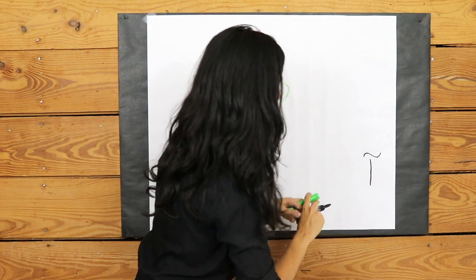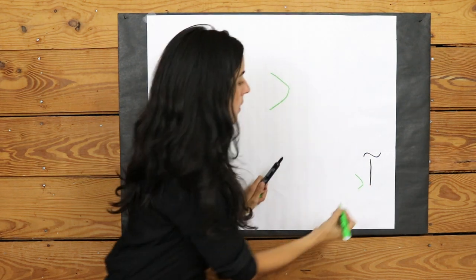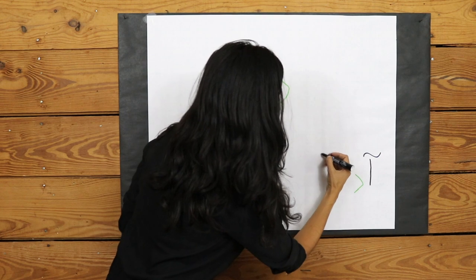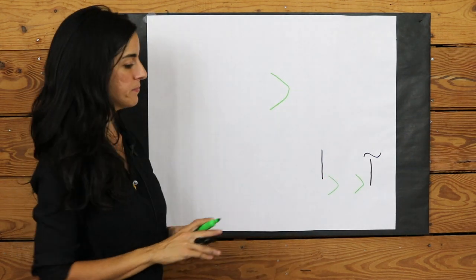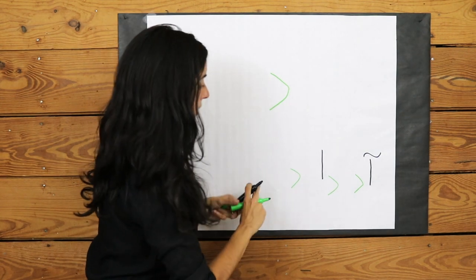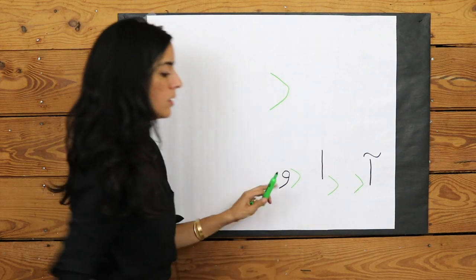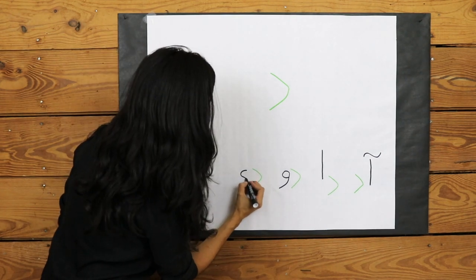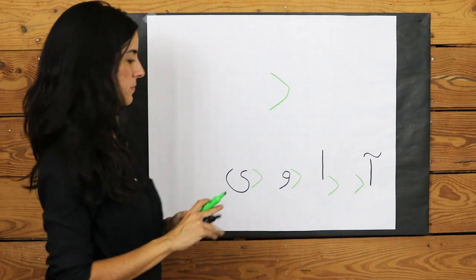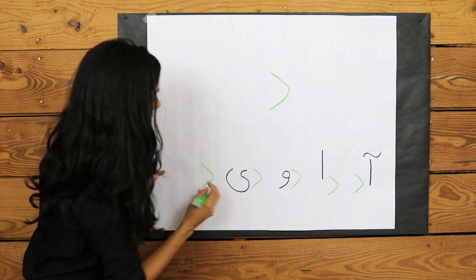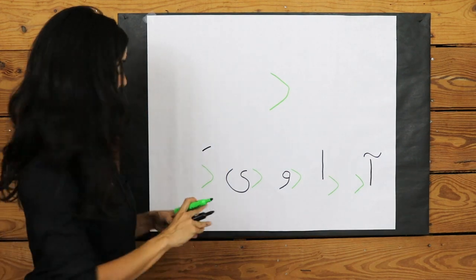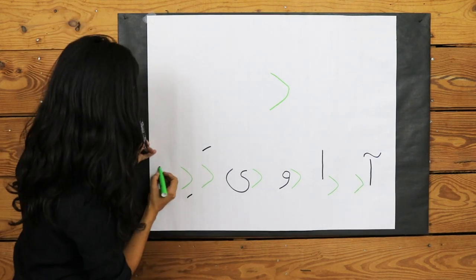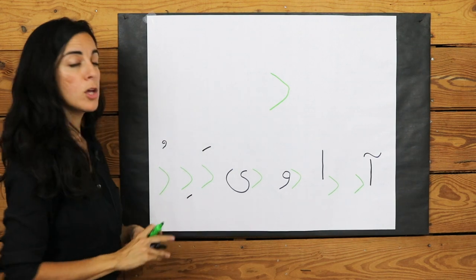If we have an A with the D after it, it becomes AD. A D with an A afterwards becomes DA. A D with the U after it becomes DU. A D with an E afterwards becomes DE. And then let's look at the accents. A D with the accent over it becomes DA. A D with an accent under it becomes DE. And a D with an O symbol above it becomes DO.